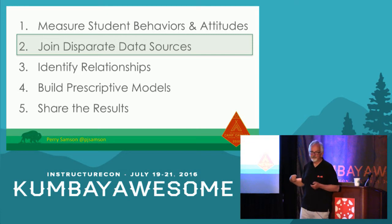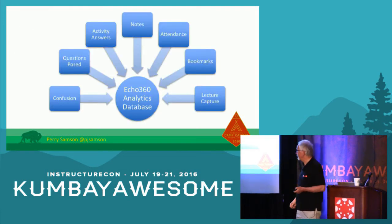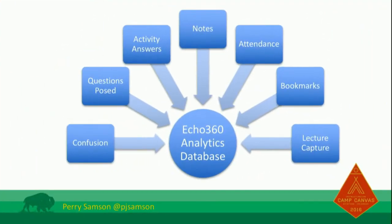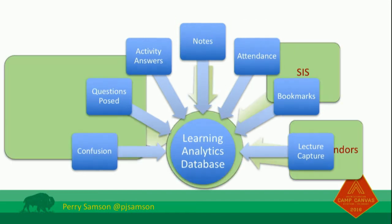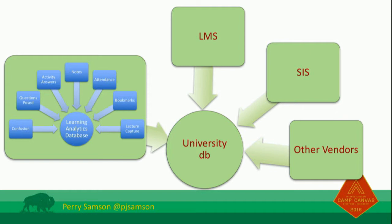Your job is to pull these data sets together. In this Echo system, you get data about: did they look at the lecture capture, when did they look at it, did they do bookmarks, did they attend class, did they pose questions — everything students are doing goes into this database. That's the Echo 360 part. Then you have the Canvas part. We drag in data from Canvas and from our student information system for background data, so we can collect the data and do some real research on what it is students do that affects their learning.